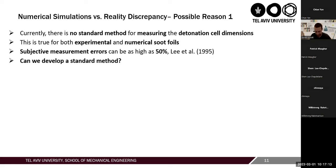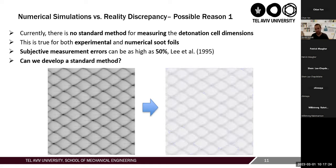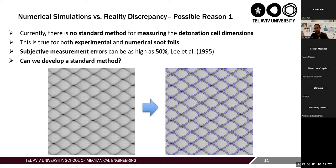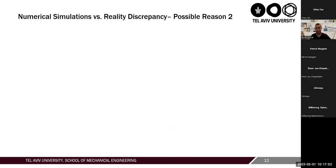We are currently working in this direction. The idea is to take a soot foil image — either numerical or experimental — and use computer software to detect the cells and get a cell size distribution objectively. But this is not the topic of today's talk, so although this reason is important, I will focus on the second possible reason.